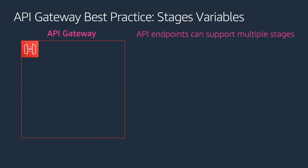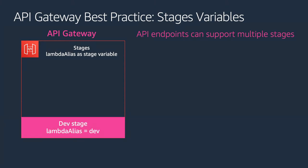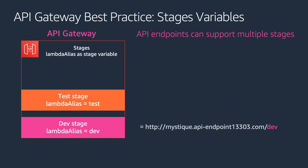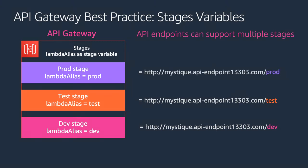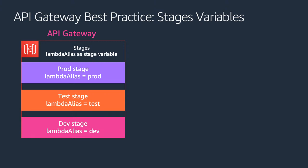You can use the concept of aliases pointing to different versions when deploying new versions of your Lambda functions. In your API Gateway you will have multiple stages for dev and test. We are going to use a concept called stages, and each stage will have a stage variable. I'm going to create a dev stage - my development environment - and everything using that URL will point to my dev environment. The URL itself will have the stage variable appended to it.